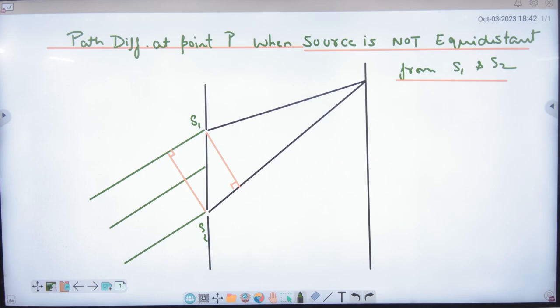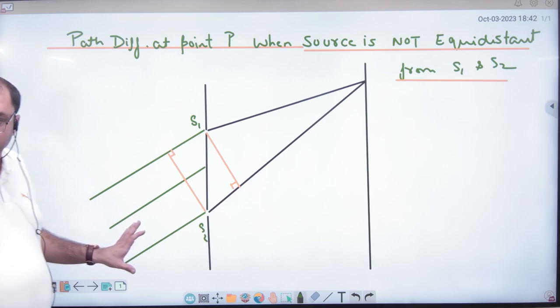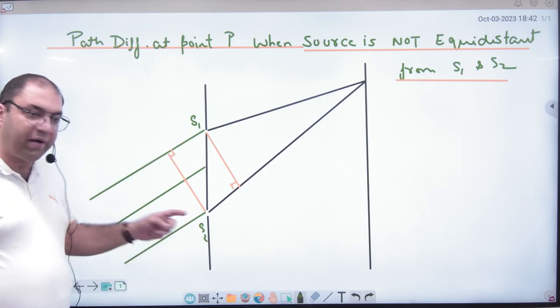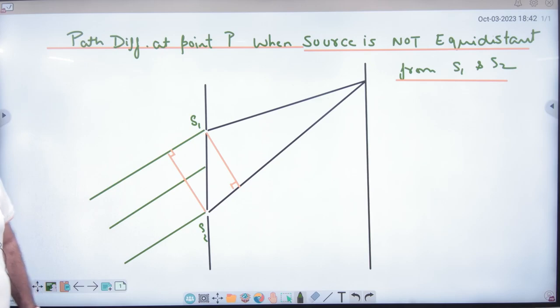So here the source is very far. And if the source is far, then this wave and this wave, path difference is going to happen. In some books this diagram plane is not given. The source is given.